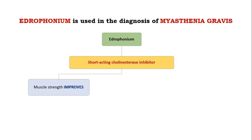Once you administer it through the intravenous route, if the muscle strength improves in a patient, you are confirming that the patient is suffering from myasthenia gravis, and you need to give cholinesterase inhibitors like neostigmine.